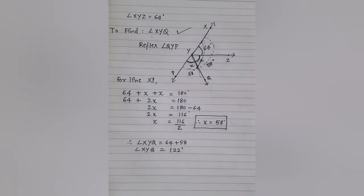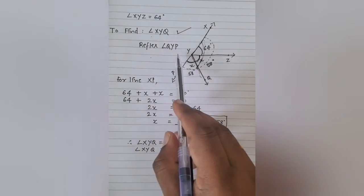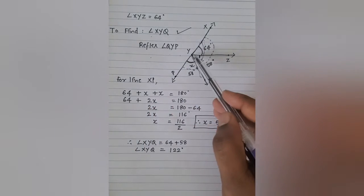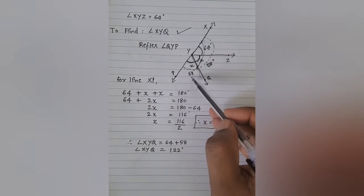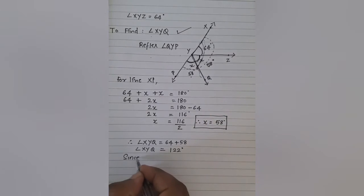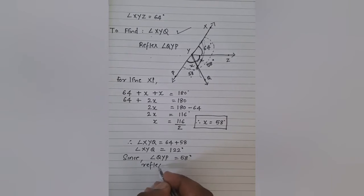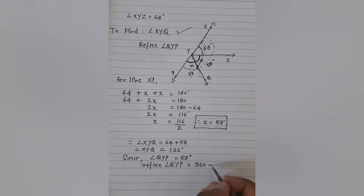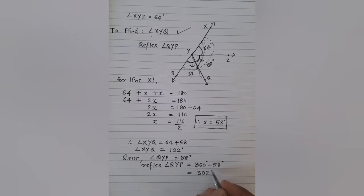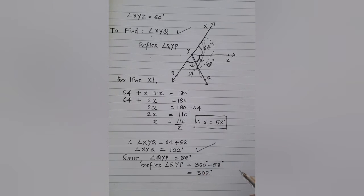What else have been asked to find? Reflex of angle QYP. Where is angle QYP? QYP is equal to how much? 58. So since angle QYP is equal to 58, now, as we did in the last question, reflex of angle QYP can be found by subtracting QYP from 360 degrees. So 360 degrees minus 58 degrees, and when you solve it, you get the answer as 302 degrees.